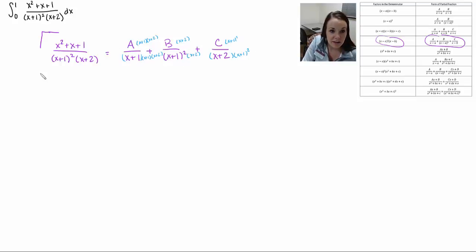So once I do that I end up with the left side staying the same. And then on the right side I can write this all over my common denominator. So I have my x plus 1, my x plus 2, my b times the x plus 2, and then my c times that x plus 1 squared all over that common denominator.